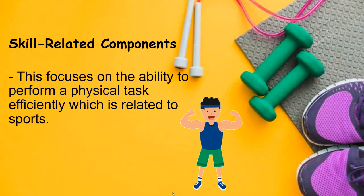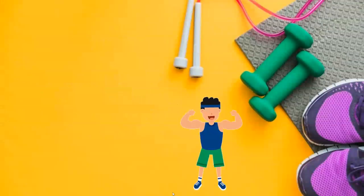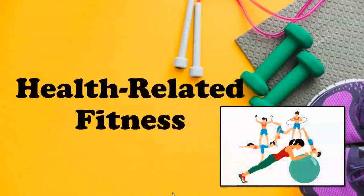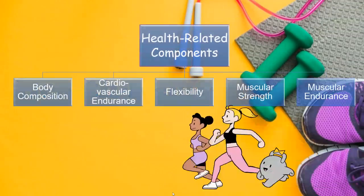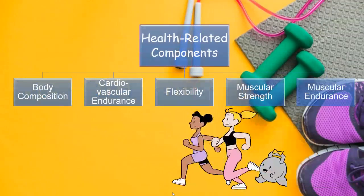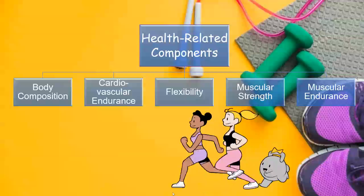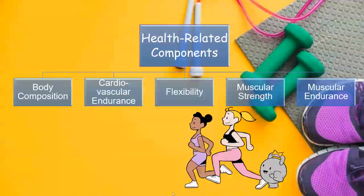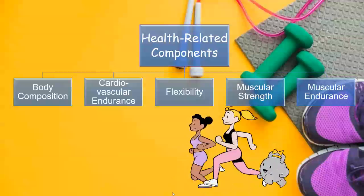The second one is the skill-related component. This focuses on the ability to perform a physical task efficiently, which is related to sports. Now, under health-related fitness we have five components: body composition, cardiovascular endurance, flexibility, muscular strength, and muscular endurance.